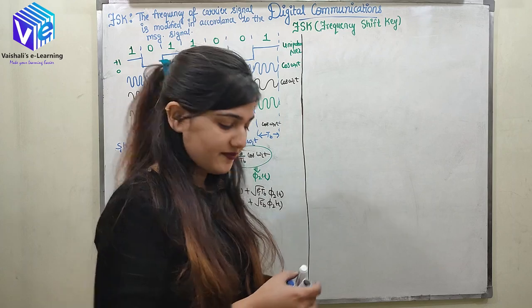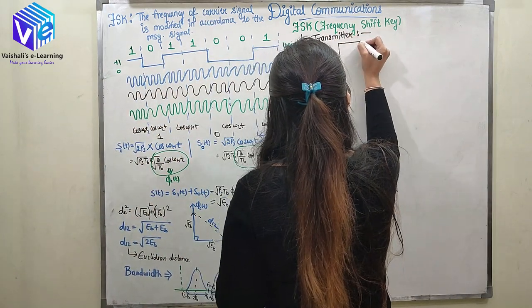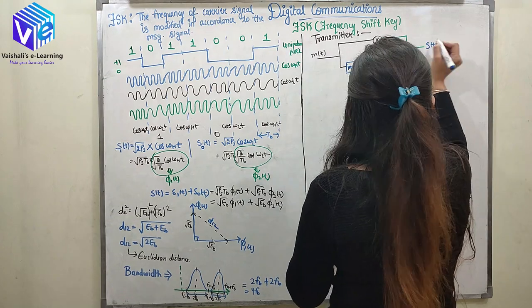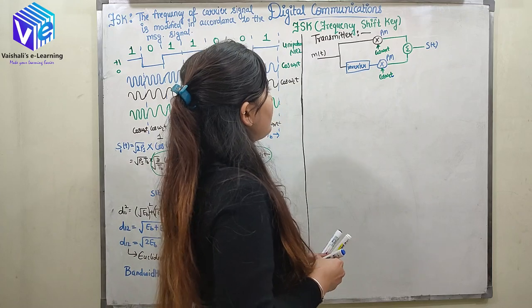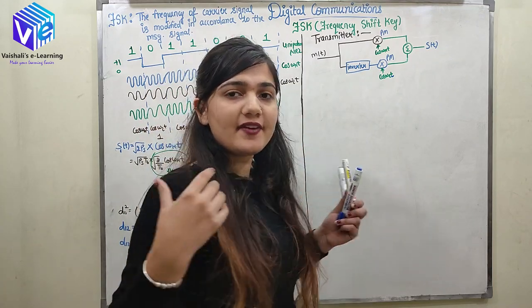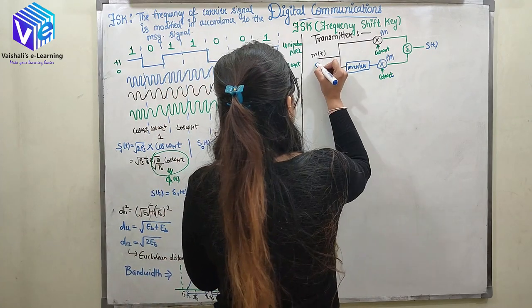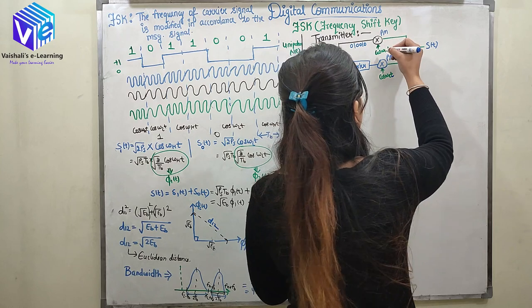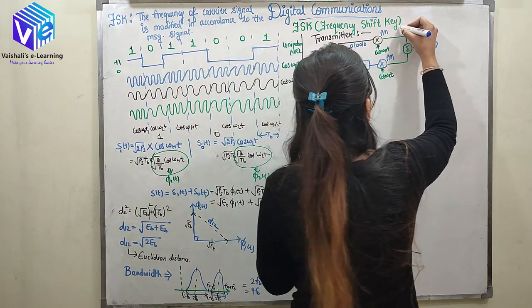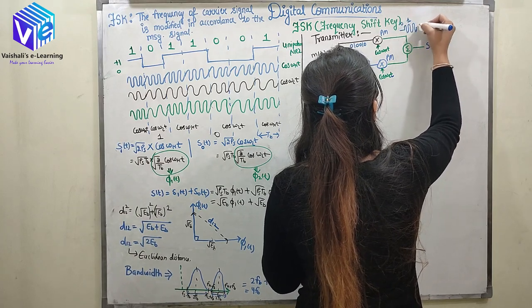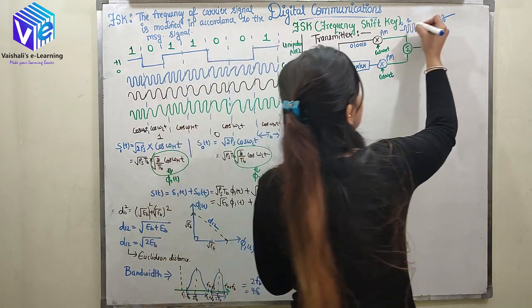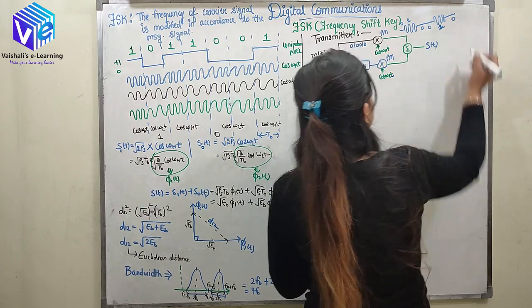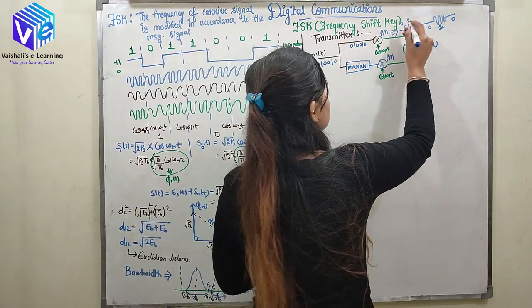In the transmitter block diagram, the message signal is fed into a product modulator where it is multiplied by cos(ω_H * t). The output shows that 1 is represented by a high frequency carrier and 0 positions produce a zero signal. So at the upper block, 1 gives a high frequency carrier output and 0 gives zero.